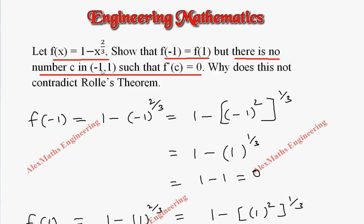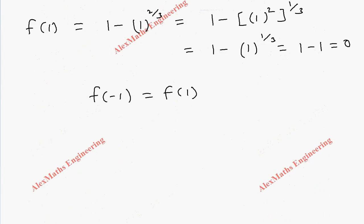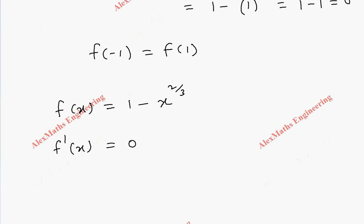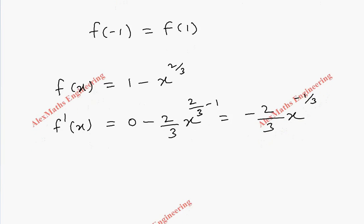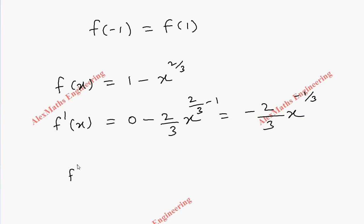But there is no number c in this interval so that f dash of c equal to 0. Let's find f dash of x. f of x is given as 1 minus x power 2 by 3. Now f dash of x: differentiation of 1 is 0, and x power 2 by 3 gives minus 2 by 3 x power 2 by 3 minus 1. By simplifying this, minus 2 by 3 x power minus 1 by 3, which we can write as minus 2 by 3 x power 1 by 3 in the denominator.